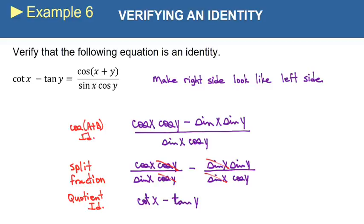So these are not so bad. I think these are actually a little easier than the verify problems in section 5.2, because you don't have as many choices. You pretty much only have one way to go here. You pretty much have to use your cosine of a plus b identity.